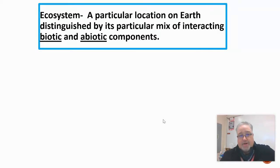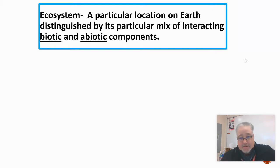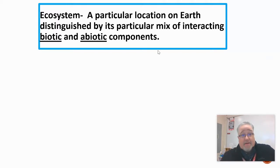So as a refresher, here's our definition: it's a particular location on Earth, distinguished by its particular mix of interacting biotic and abiotic components. For example, a desert would be a particular location on Earth, and it would have biotic and abiotic components in it.